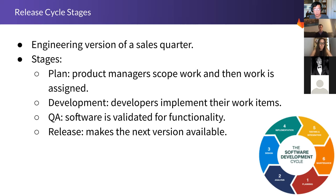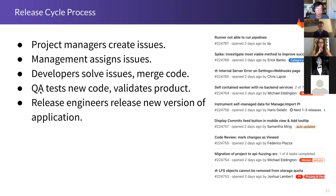Stage two of the software development cycle: developers work on implementing the planned features. After that, quality assurance engineers make sure it works. Then a release team makes the next version of the software available — this is a really big event, and everyone can breathe a sigh of relief. One important thing: the amount of stress in engineering teams basically ratchets up as you get closer to a release date, because the vast majority of engineering projects are late.